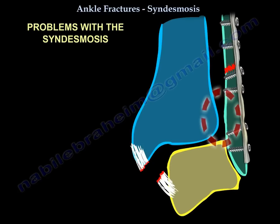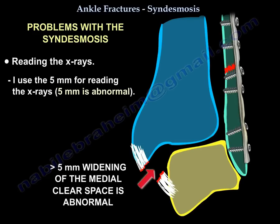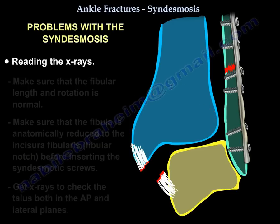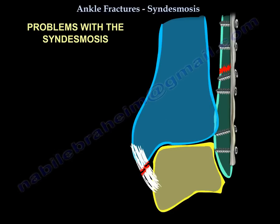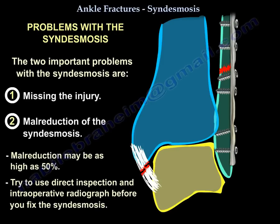What are the problems with the syndesmosis? Number one is reading the x-rays — I use 5 mm as my threshold for both the medial clear space and the tibia-fibular clear space. I want to make sure the fibula is anatomically reduced to the incisura before inserting the syndesmotic screws, and I want to confirm this on both AP and lateral x-ray views. The two important problems are: missing the injury, and if you discover and fix it, you may malreduce it. Some people think the malreduction rate is as high as 50%, which seems high. Try to use direct inspection and intraoperative radiograph before you fix the syndesmosis.